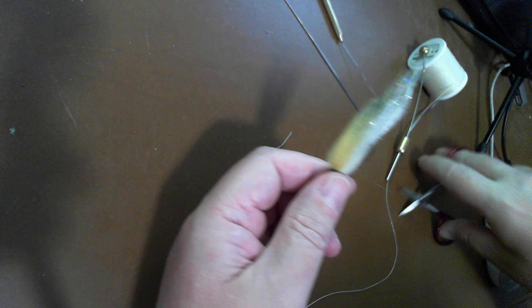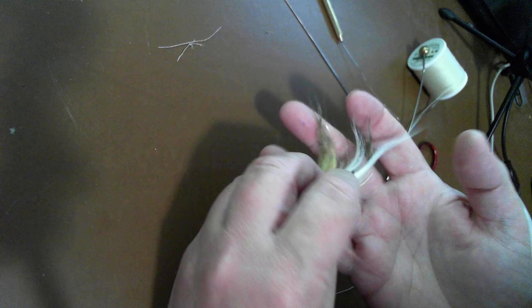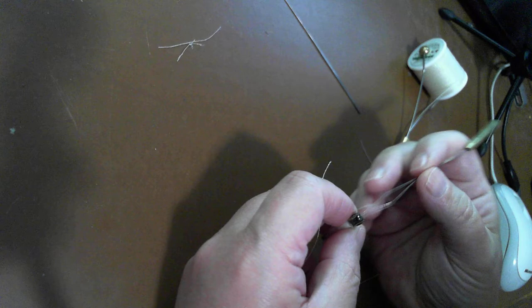Another way that I tie my knot on is to use what's called the modified trilene knot. The modified trilene knot is a little bit more complicated. I might have to do this a little bit differently.